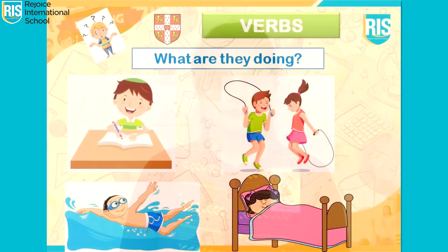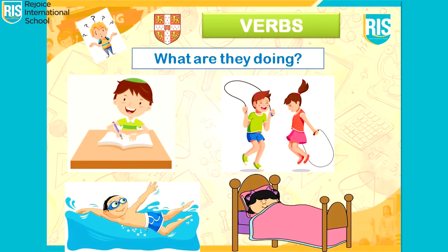Let's see a few more examples with pictures. Can you guess what they are doing? In the first picture, the boy is writing. In the second picture, the boy and the girl are skipping. In the third picture, the boy is swimming. And in the fourth picture, the girl is sleeping. So writing, skipping, swimming, and sleeping are all action words.